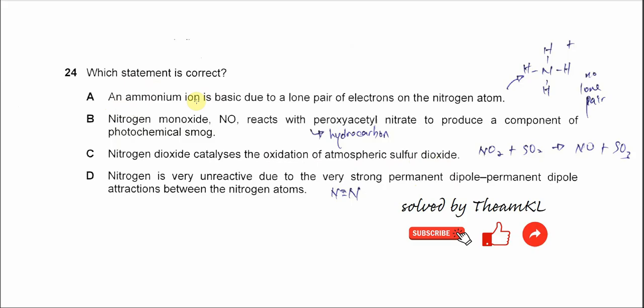An ammonium ion is basic due to the lone pair of electrons on the nitrogen atom. For ammonium ion, there is no lone pair or bonding pair. Therefore, this statement is wrong.